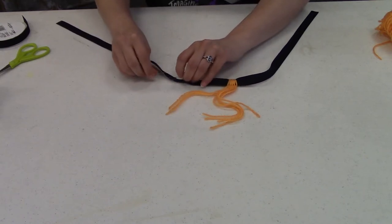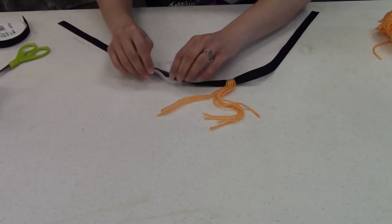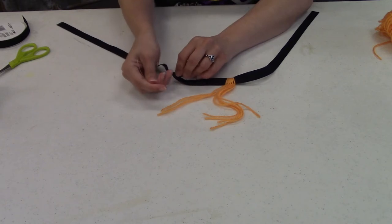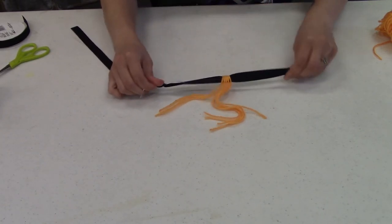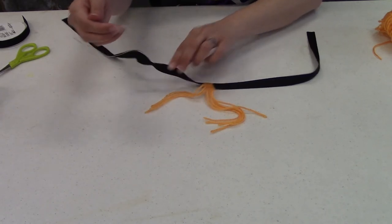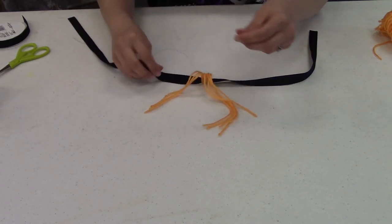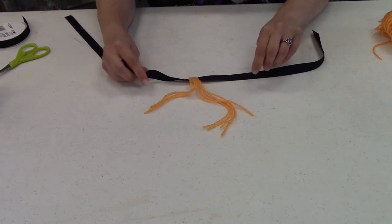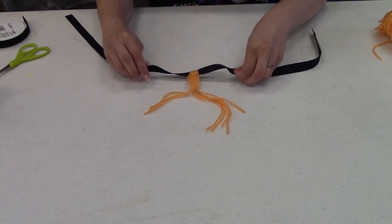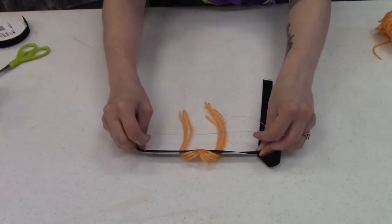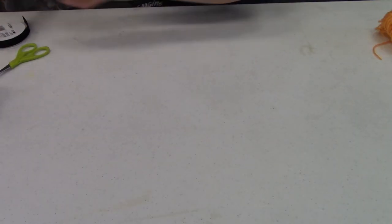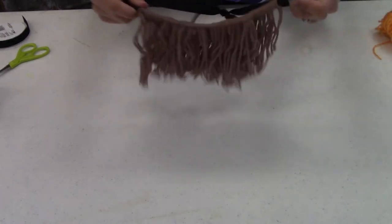But I would make sure to double knot it when you're doing this because you want to make sure your mustache stays on. It's okay if it squishes the ribbon. And just do the same thing. I won't tie both, but you'll do the same thing on the other side.